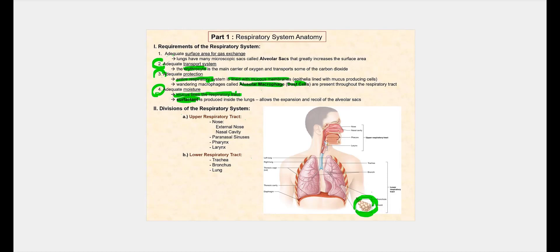Let's now look at the division of the respiratory system. We have what's called the upper respiratory tract and the lower respiratory tract. The upper respiratory tract begins at the nose down to the larynx, while the lower respiratory tract begins at the trachea down to the lungs. When we look at the next slide, we will look at another way to classify or divide the respiratory system.